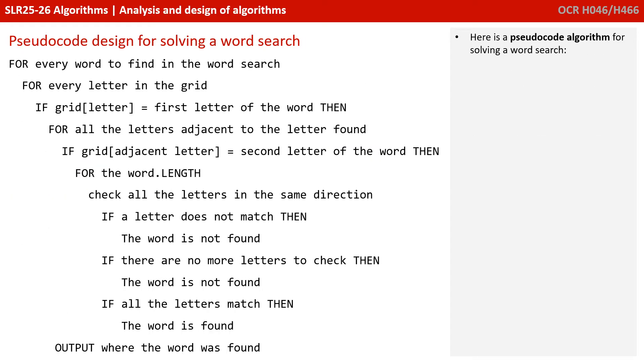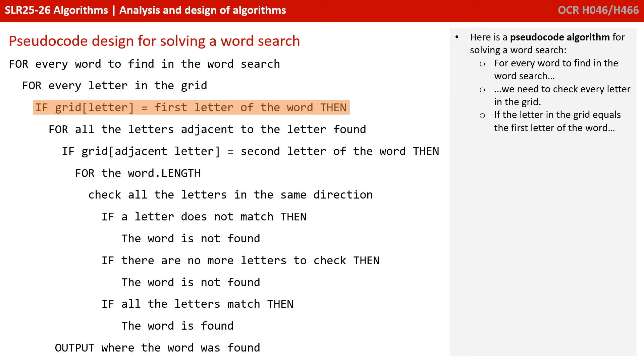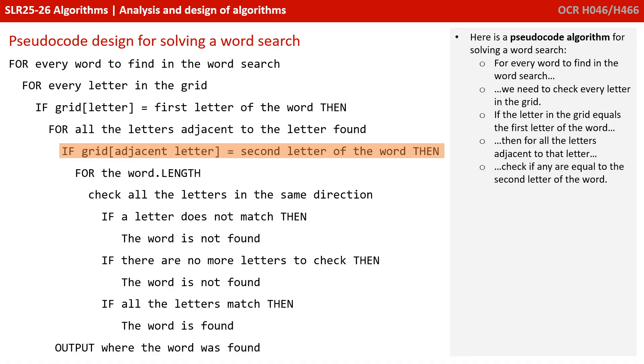So here is an outline algorithm for solving the word search. For every word to find in the word search, we need to check every letter in the grid. If the letter in the grid equals the first letter of the word, then for all the letters adjacent to the letter found, check if the adjacent letter in the grid is equal to the second letter of the word.